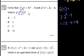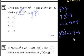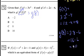So f of 2 is equal to 8, meaning we need g of 8. g of 8: everywhere you see an x, just pop in an 8. That is equal to 2 times 8 minus 6, which is 16 minus 6, which equals 10. That's choice D.